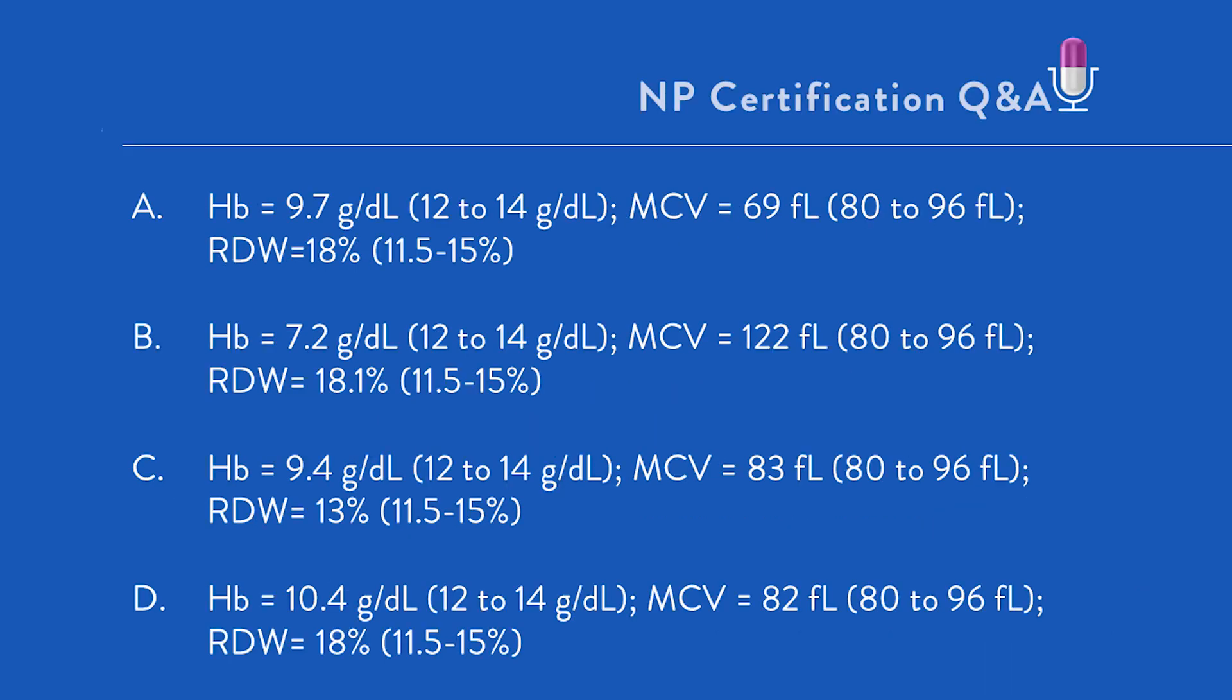Option A: hemoglobin 9.7, MCV of 69, so microcytic, RDW elevated at 18%, telling us the new cells are even more microcytic, so more profound anemia developing.